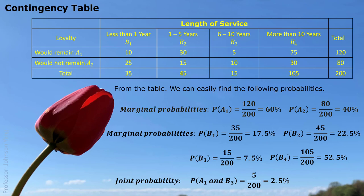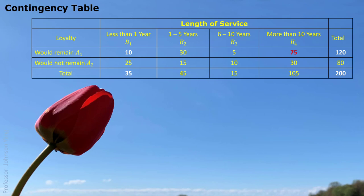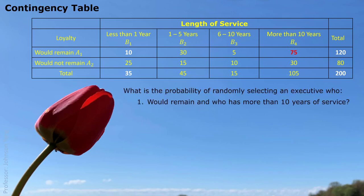Now we use this table to answer the following questions. First: randomly pick a person — what is the probability the person would remain and has worked for the company more than 10 years? That means A1 and B4, which is a joint probability. The answer is 37.5%.